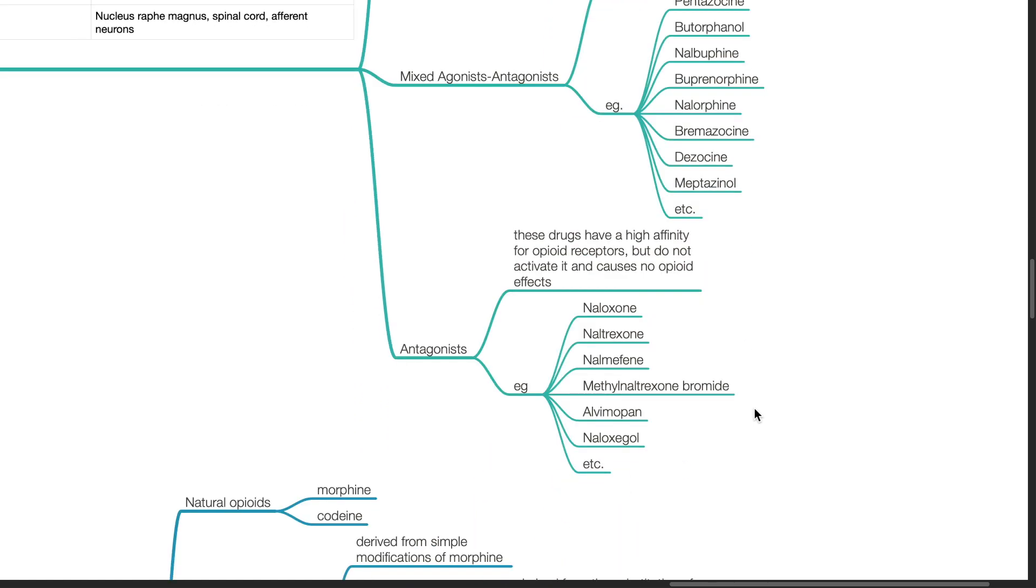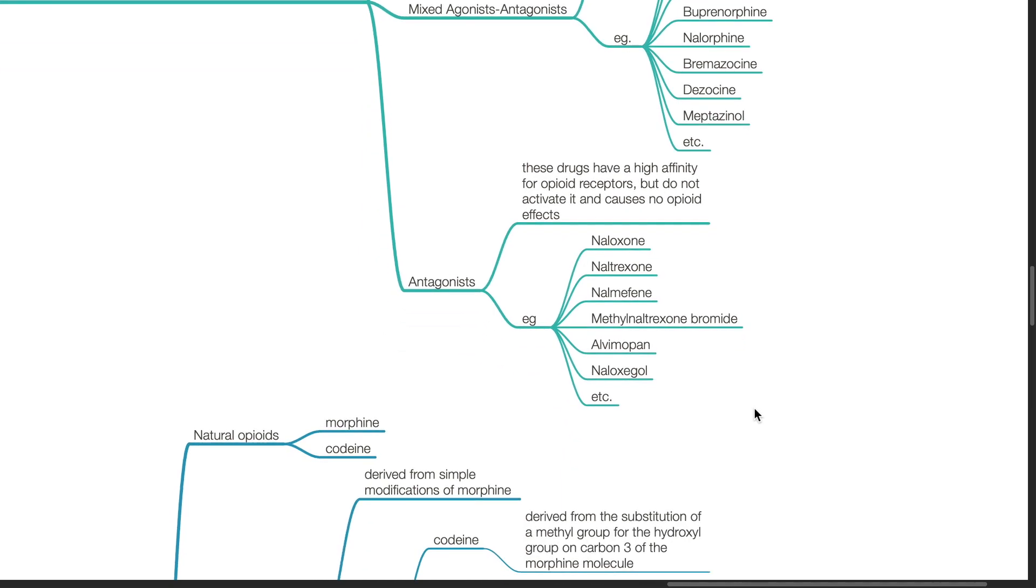Opioid antagonists are drugs that have a high affinity for opioid receptors but do not activate it and causes no opioid effects. Examples include naloxone, naltrexone, nalmefene, methyl naltrexone bromide, alvimopan, naloxegol.